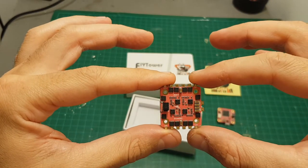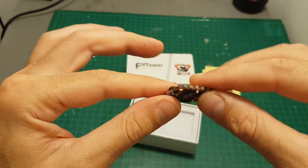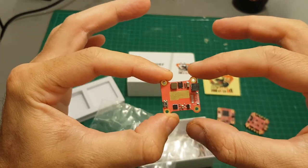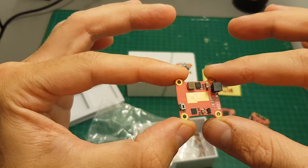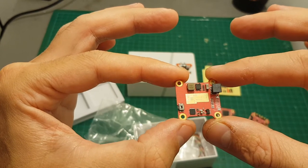The 4-in-one ESC board is a 20 ampere BLHeli_S DSHOT compatible board and we're also getting the VTX which has a selectable power output of 25, 100 and 200 milliwatts.